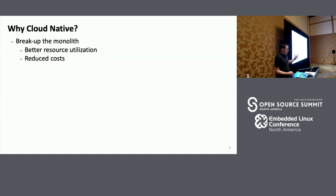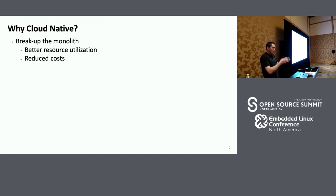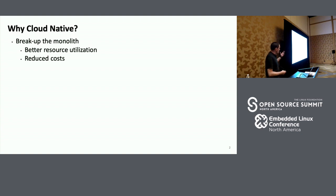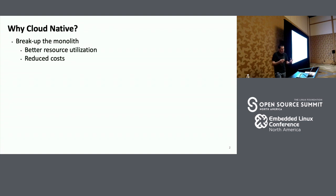Cloud-native is all about containers for the most part, breaking up the monolith. Not because it's a cool phrase, but because you get better resource utilization by being able to scale just parts of your components. You have your teams focus on individual components as opposed to the entire monolith. And by breaking it up, you're supposed to be able to reduce your cost because you don't have to scale the entire thing when you only need to scale one little aspect of it.